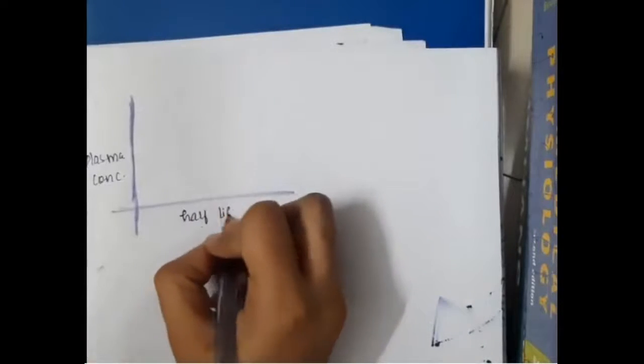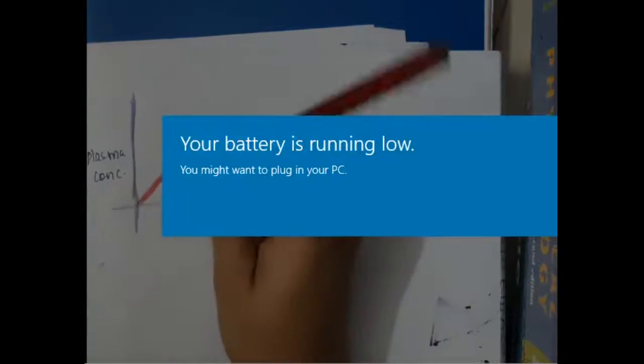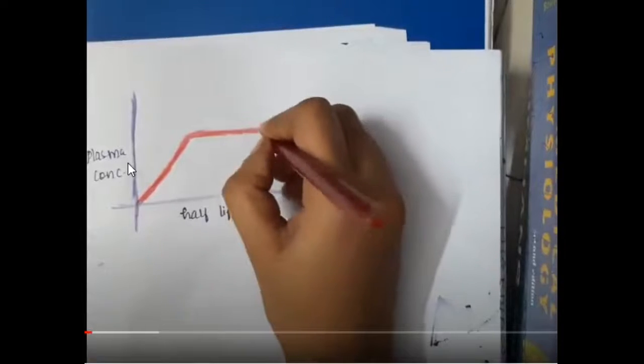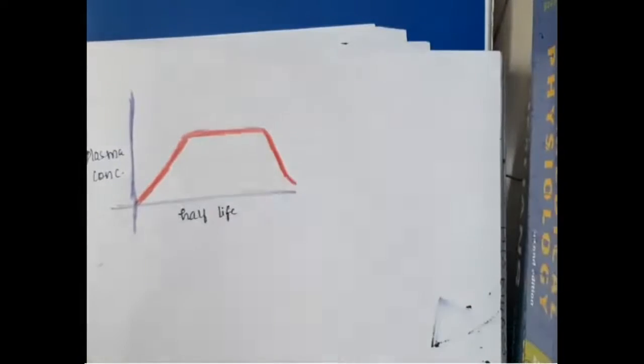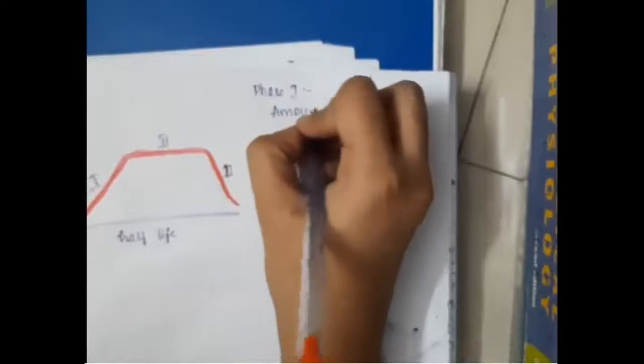Once you give a drug, it goes through three phases. First, we have plasma concentration and half-life — we will draw a graph. There is first an increase in plasma concentration, then the plasma concentration becomes stable where the amount of drug entering the plasma equals the amount of drug elimination. Finally, the drug eliminated will be more than the drug entering, causing a decreased graph.